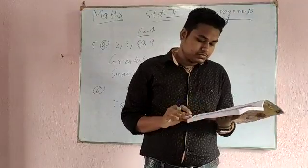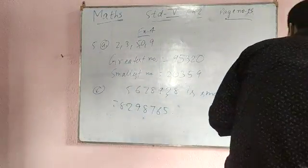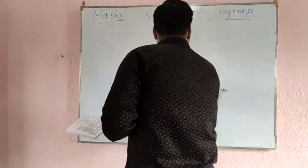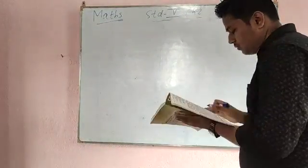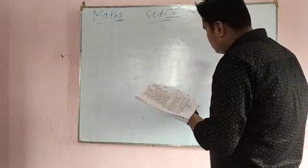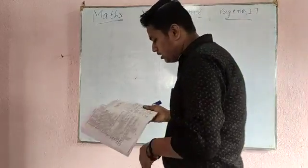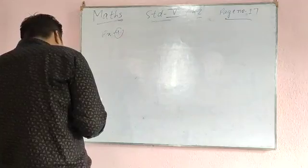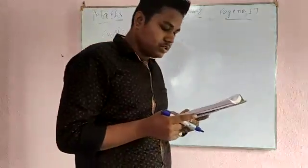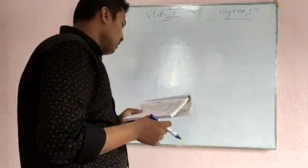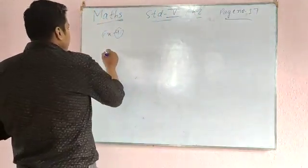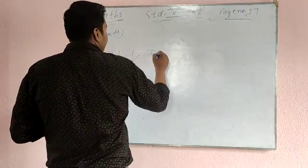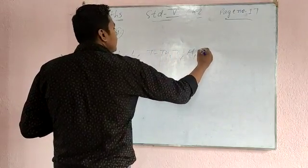So now I am going to explain the example sums for exercise 5. Come to page number 17. Example number 9 is: write in words in the international system the number 5, 6, 3, 0, 4, 2, 1, 9. In the Indian system you see: 10 lakh, lakh, 10,000, 1,000, 100, 10, 1 — this is known as the Indian system.